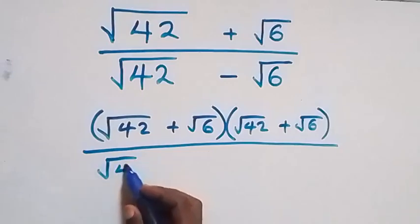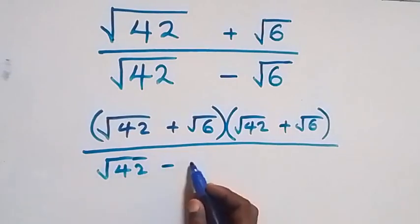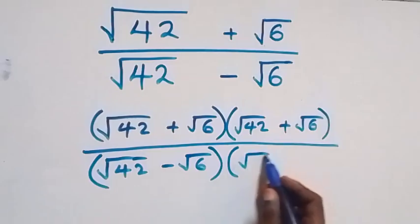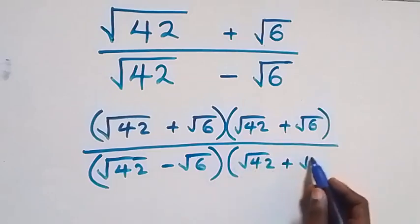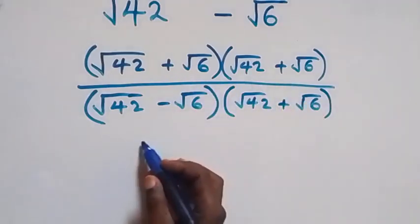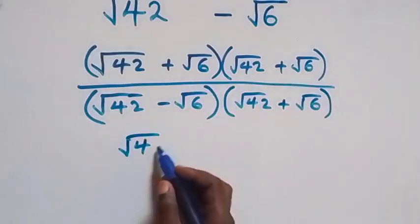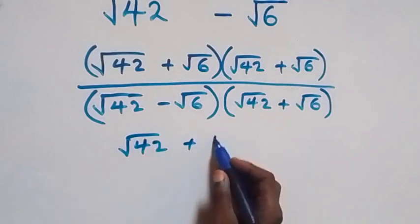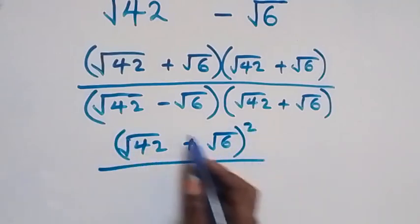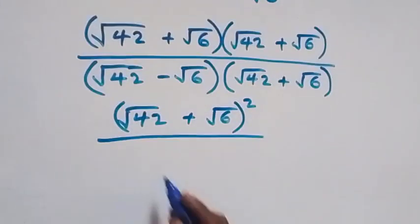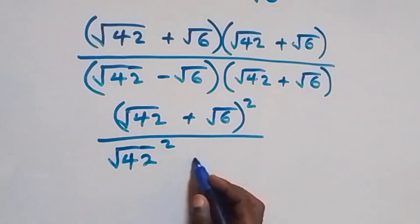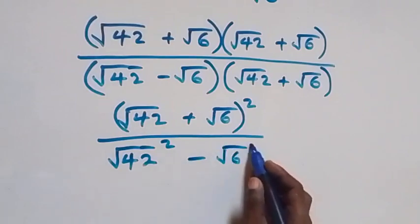Divided by (root 42 minus root 6) multiplied by (root 42 plus root 6). The numerator has the same bracket, so we can write it as (root 42 plus root 6) all squared, divided by the difference of squares form.